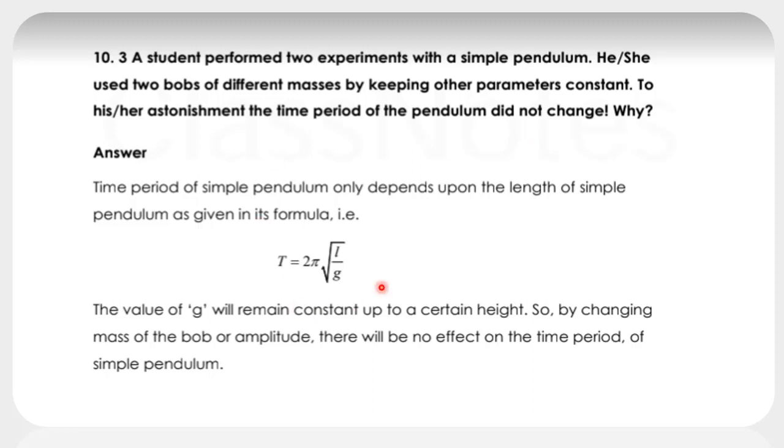Because we have seen the formula for time period, that is 2π√(L/g). There is no mass. Mass will not affect the time period of simple pendulum. That's why there will be no effect on time period of simple pendulum.